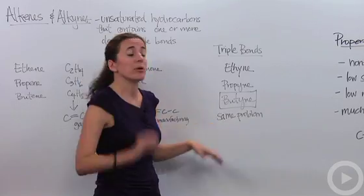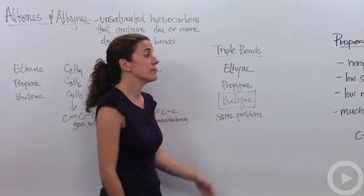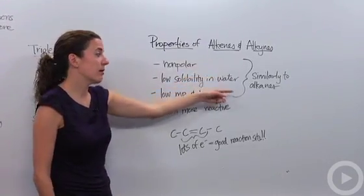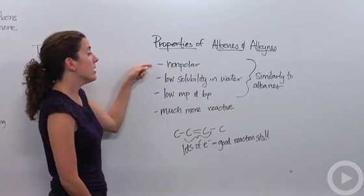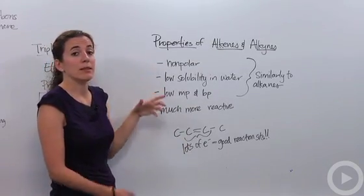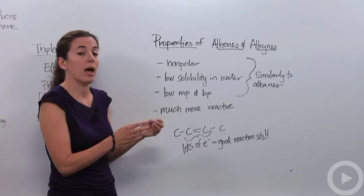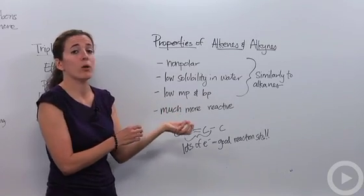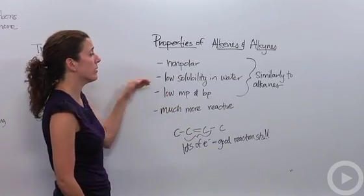Okay, so what are some properties of alkenes and alkynes? Well, just like alkanes, very similar to alkanes as we discussed, they're nonpolar, meaning that they do not have any distinguishing—one atom within it is not more electronegative than the other. So it's a nonpolar compound.